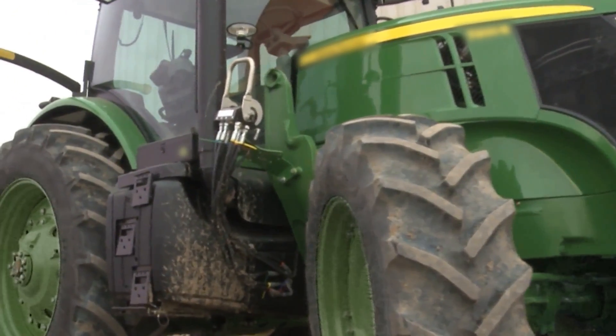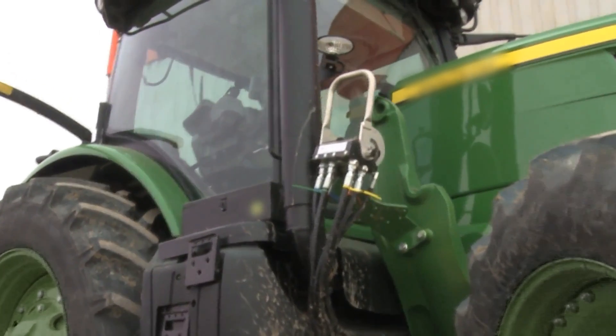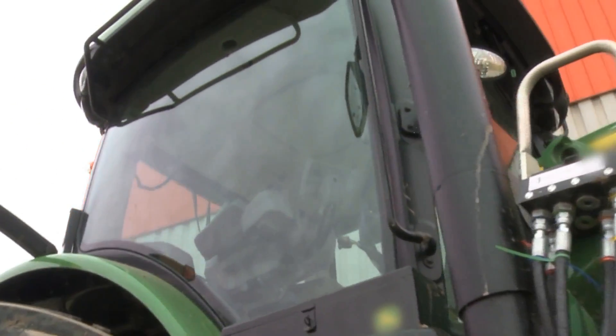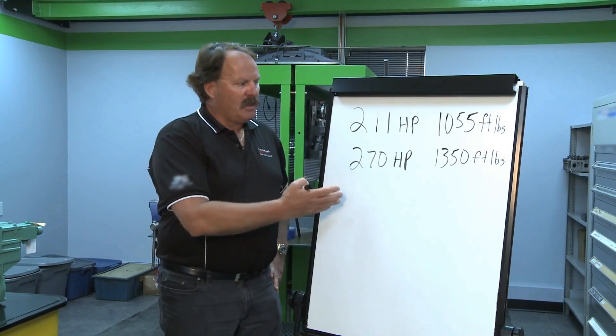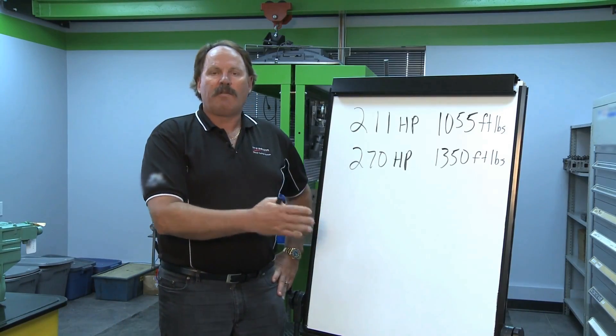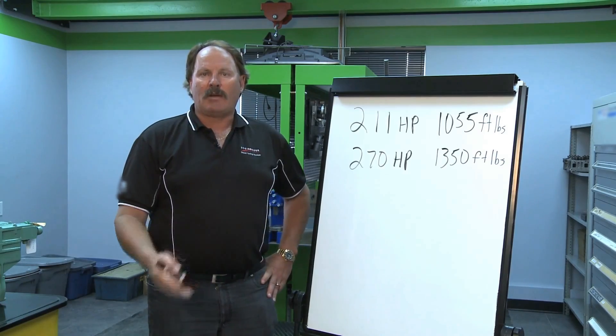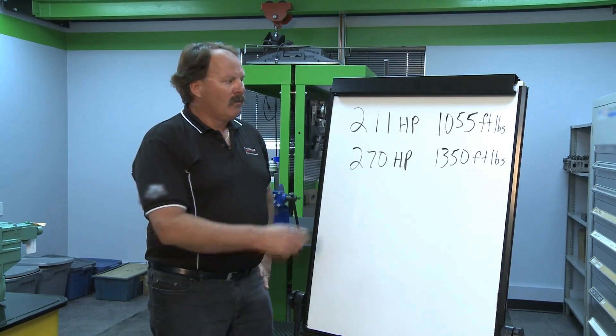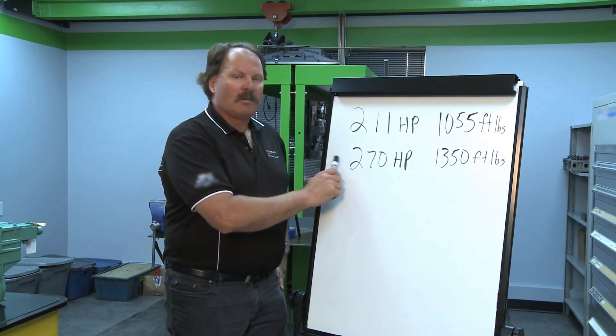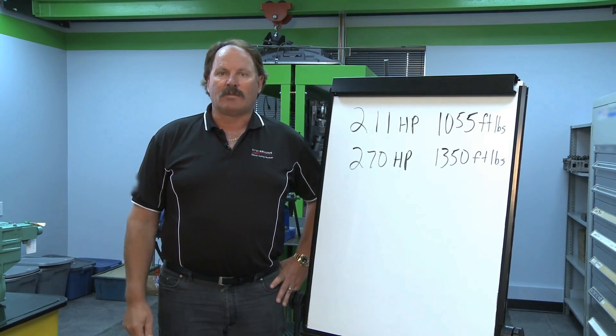This customer just loves this tractor. He uses it to pull a chopper to chop silage for his feedlot operation, and he's able to save about $12,000 in the acquisition cost of this tractor instead of buying the 270 horsepower from the manufacturer to start with.